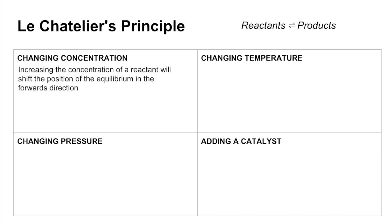Change in concentration first. If you increase the concentration of a reactant, the system wants to minimise that, so it moves forwards and makes more product to get rid of those reactants. So the equilibrium will shift in the forwards direction.